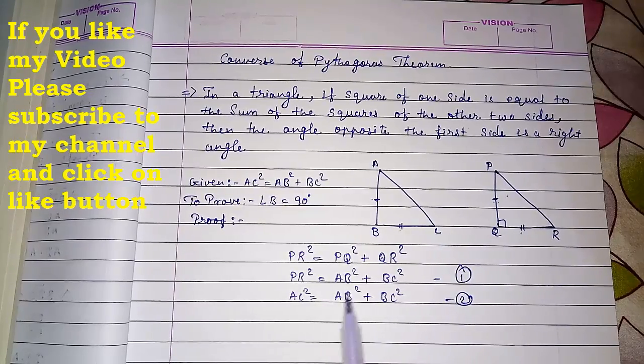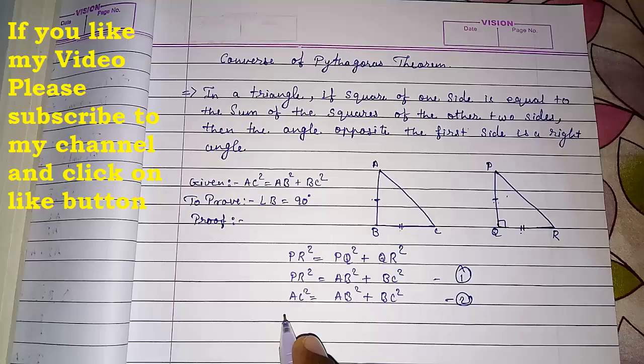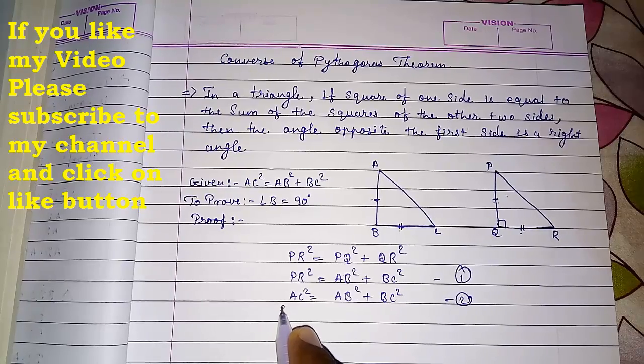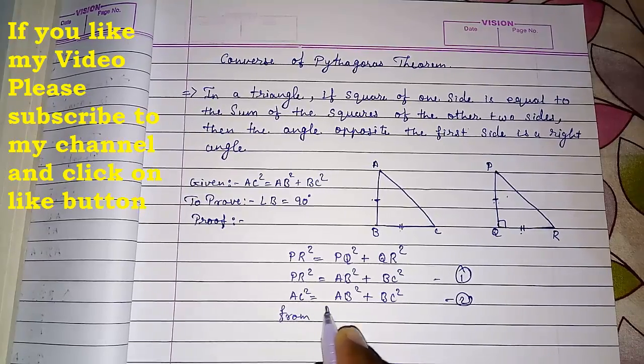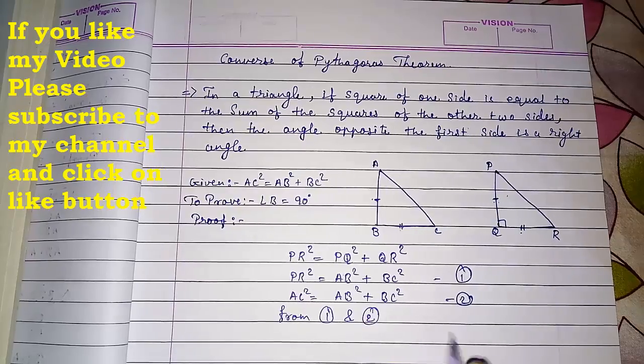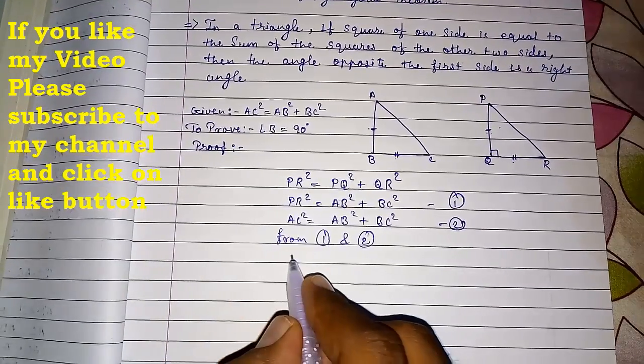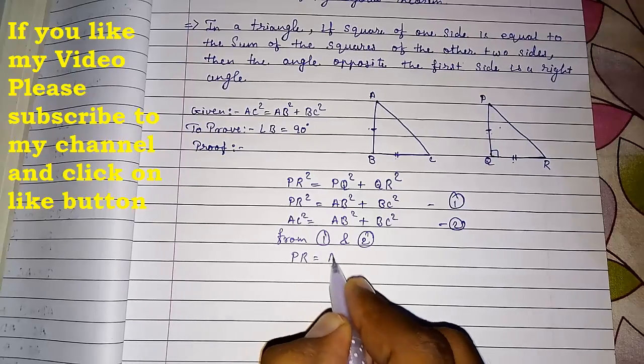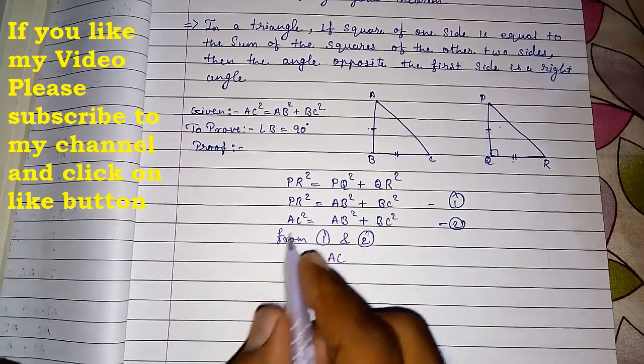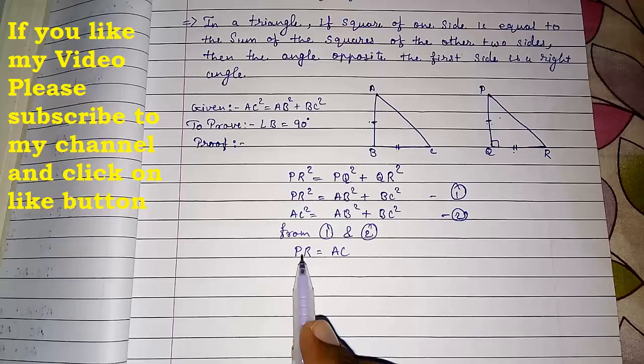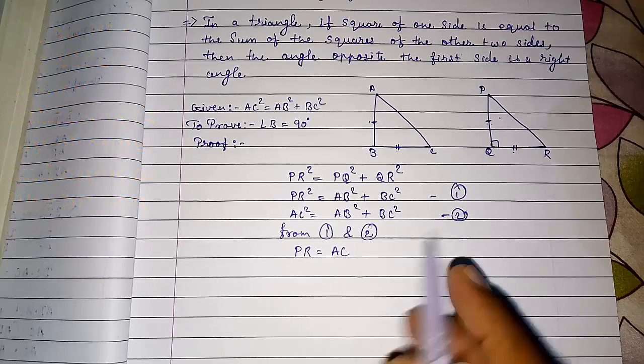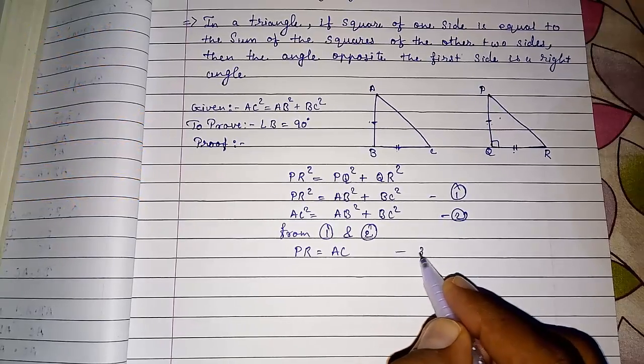So from one and two, the right hand sides are equal, so we can say from one and two that PR = AC. Directly I am writing, otherwise PR² = AC², square cuts and PR = AC. Now take this as result number three.